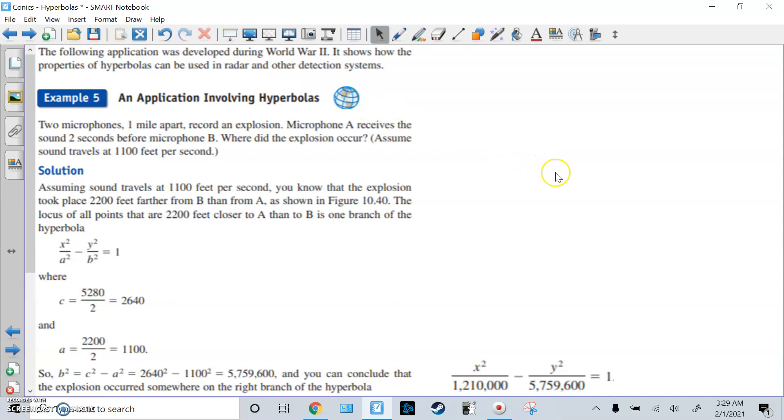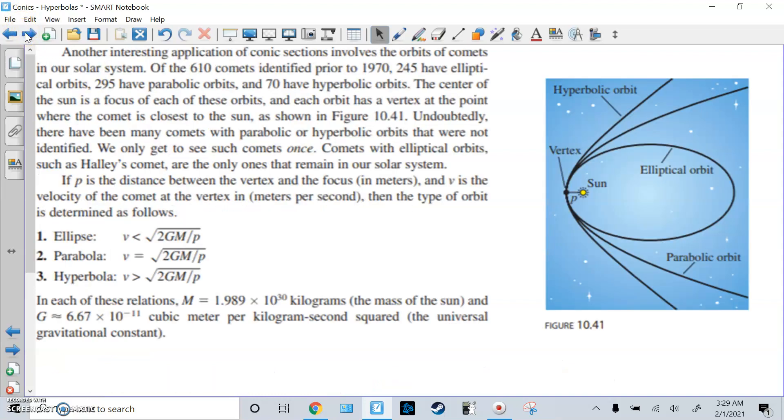Here are some applications. World War II - it shows how hyperbola-shaped particles can be used for radar detection systems. You can read it if you want. Another one is orbits, comets, and solar system. Again, you can read this if you want. I'm not going to worry too much about it.